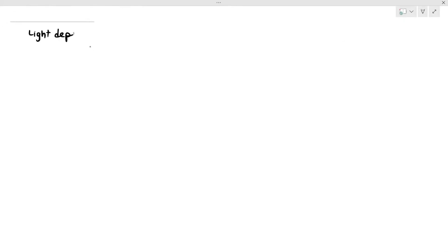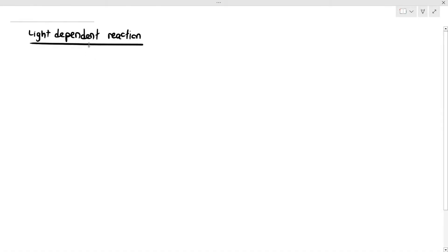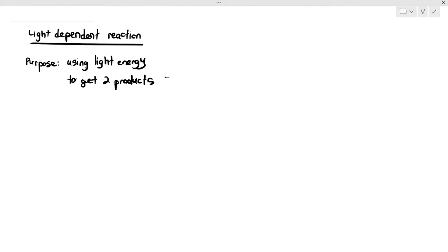In this particular video, we are going to do a deep dive into light-dependent reaction, which means I'm going to give you a comprehensive explanation as to what is going on during this process. Light-dependent reaction has one purpose: it is to use light energy, whether from sunlight or artificial light, to get two products — ATP and also reduced NADP.